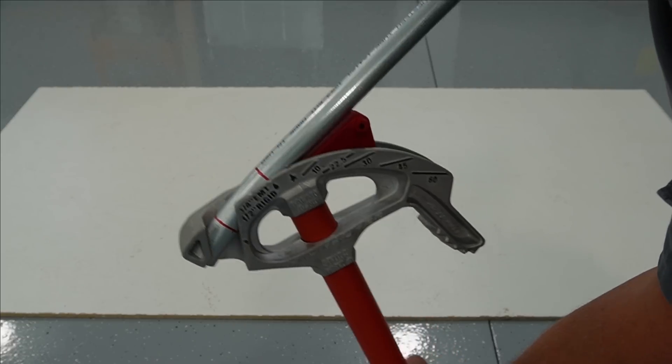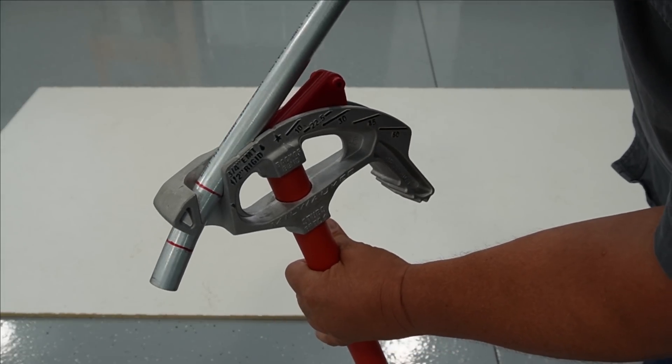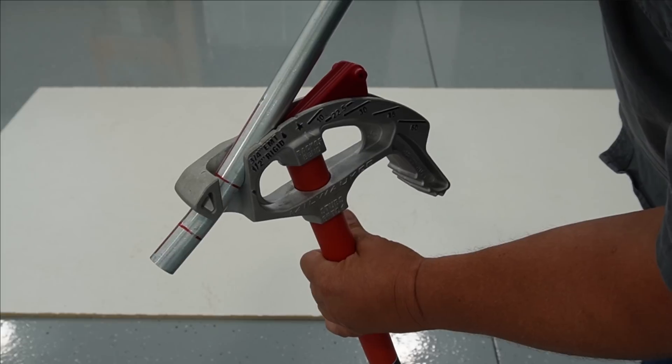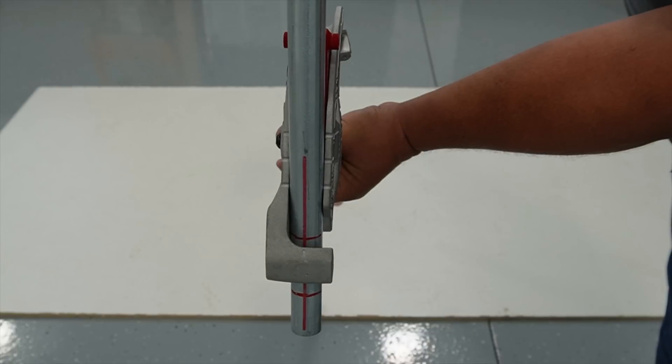Now I can move the conduit down to the second bend and spin it 180 degrees and align the other red mark with the center of the bender.